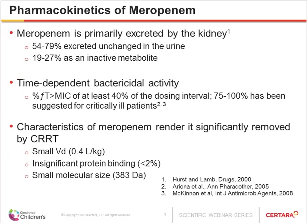Meropenem is primarily excreted by the kidneys and is characterized by time-dependent bactericidal activity. Its efficacy is determined by the percentage of time during the dosing interval that the concentration of free drug in the serum exceeds the MIC — the minimum inhibitory concentration — which is determined in the microbiology lab from blood cultures. The characteristics of meropenem, including small volume of distribution, minimal protein binding, and small molecular size, render it significantly removed by CRRT.